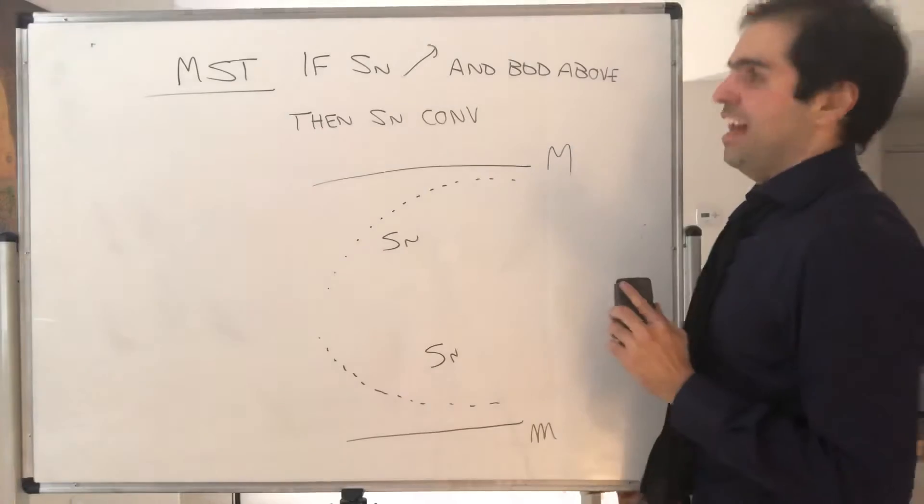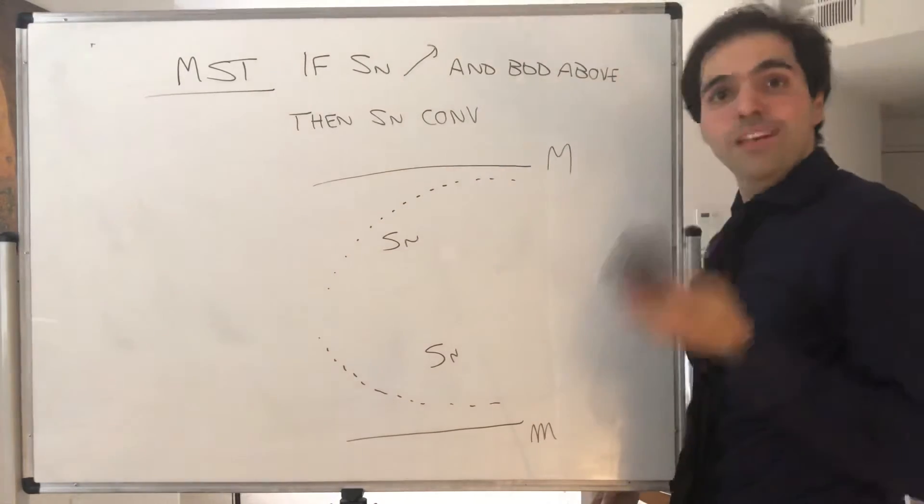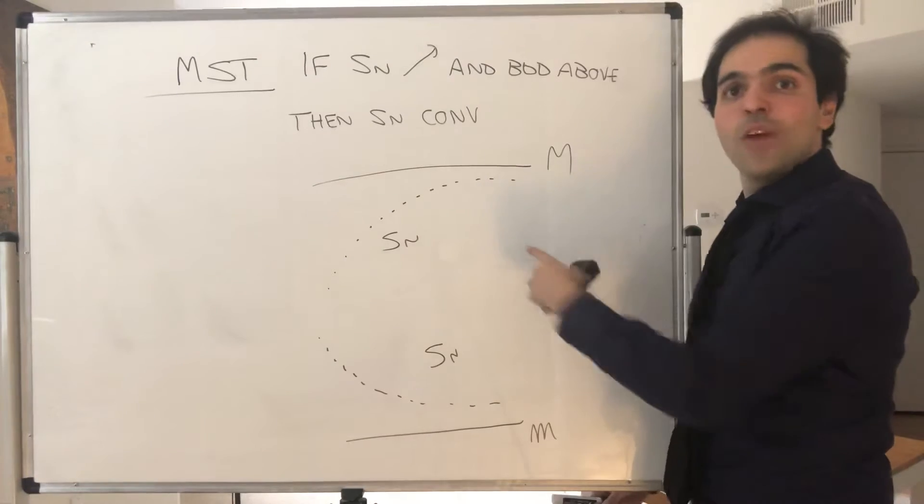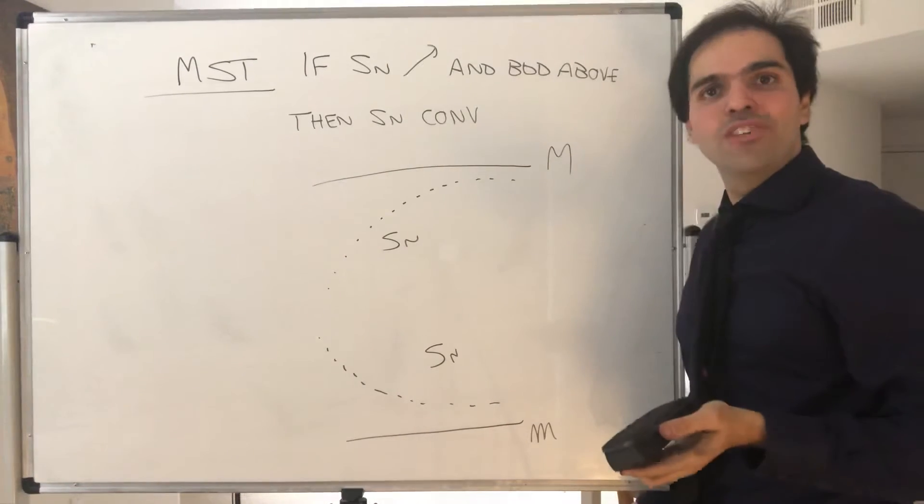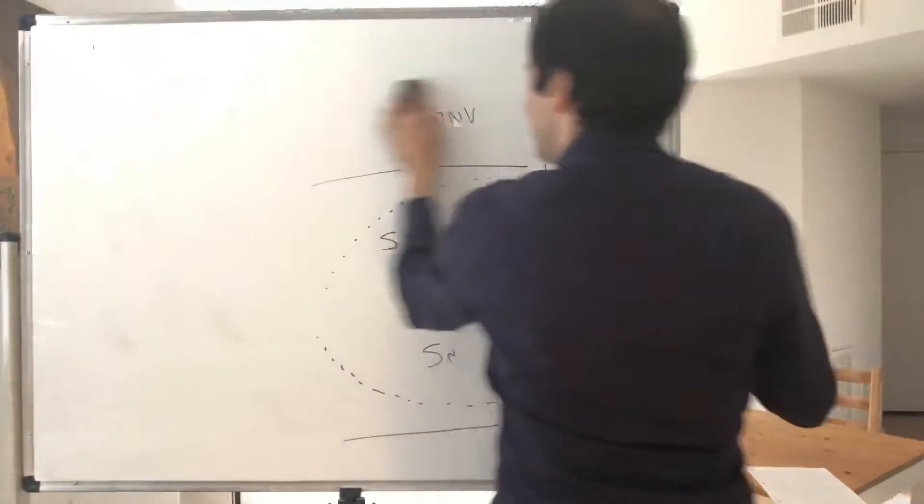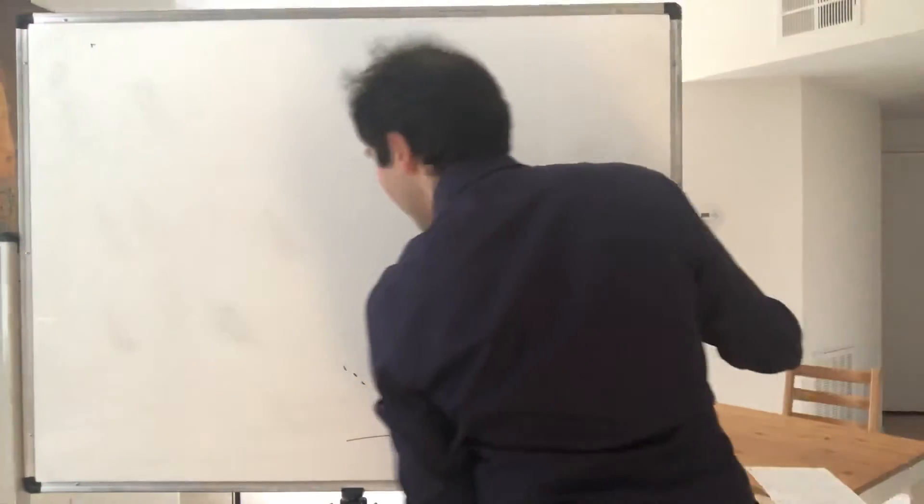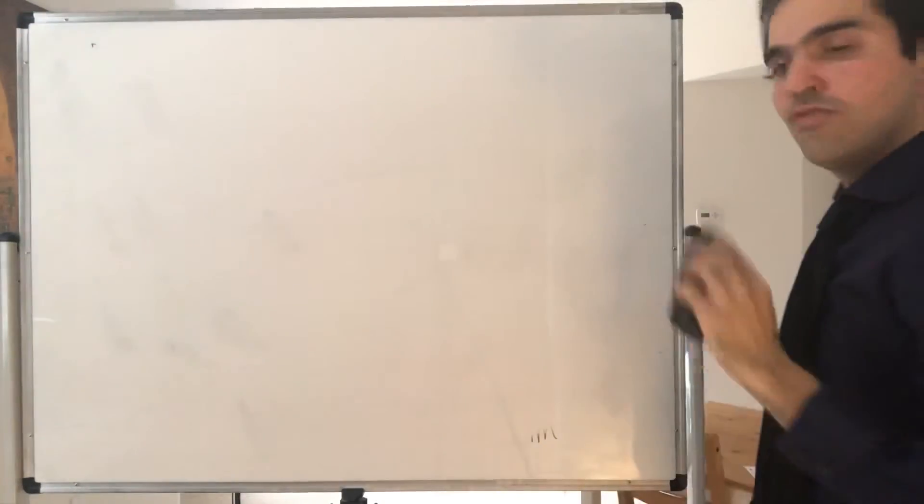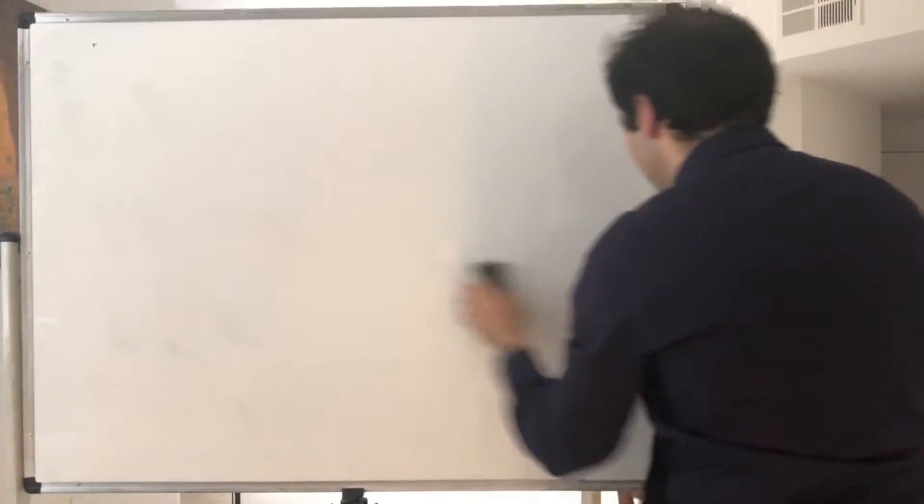And not only that. Remember, the limit of a sequence doesn't always exist. But using this, we can actually define a generalization of a limit which always exists, and that's what's called the limsup. It's really a generalization of the soup but for limits. Let me explain what's going on.